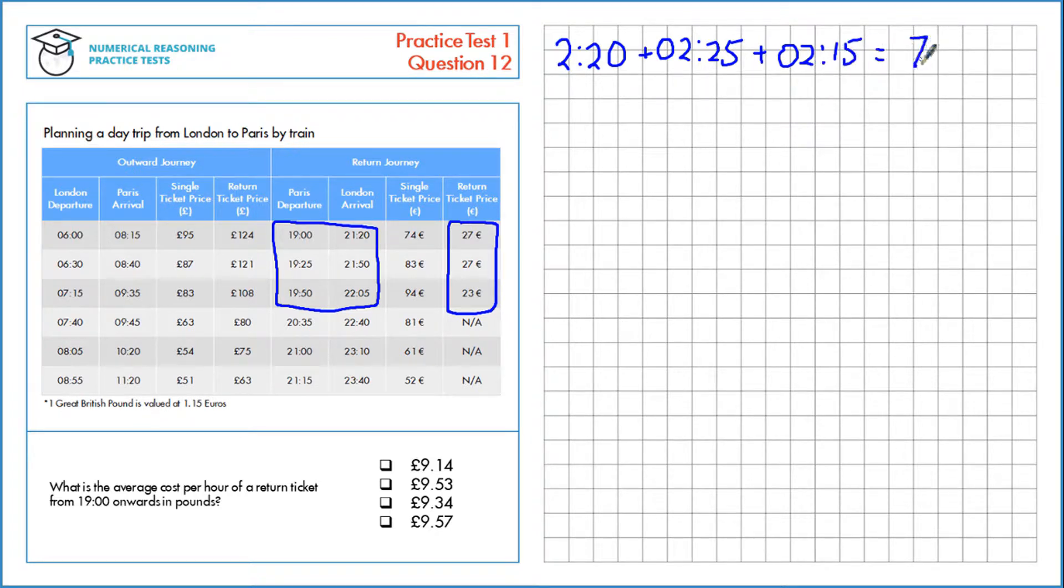gives us a total of seven hours exactly. The total return ticket costs: 27 plus 27 plus 23 is 77 euros. If you want the average cost per hour, you want the total cost, that's 77 euros, divided by